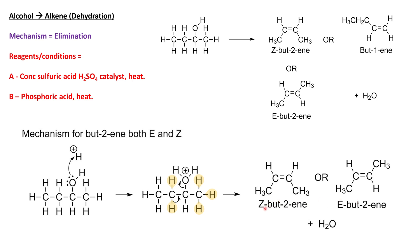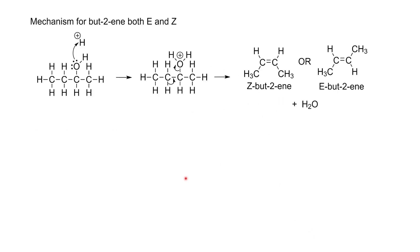We've got the E and the Z — we don't know which will be the major or minor product, but we know both will form. Determining major vs. minor would be more university-level. For naming: Z means the groups are on the same side. For E, a helpful mnemonic is 'Egyptian' — imagining the stereotypical ancient Egyptian painting pose with arms. For Z, imagine almighty Zeus with both hands raised. Remember that water is a byproduct here.